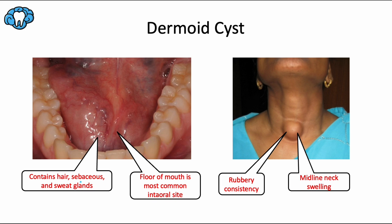The most common intraoral site is the floor of the mouth under the tongue. If the dermoid cyst occurs above the mylohyoid muscle, it will appear at the floor of the mouth, but if it occurs below the mylohyoid muscle, it will appear as a mass in the midline of the neck. It's usually a well-circumscribed, mobile, and compressible soft tissue enlargement with a doughy or rubbery consistency. We can compare this to oral lymphoid lesions like the branchial cleft cyst and the cystic hygroma, which both appear laterally on the neck, in front of or behind the sternocleidomastoid muscle — whereas a dermoid cyst on the neck appears at the midline.